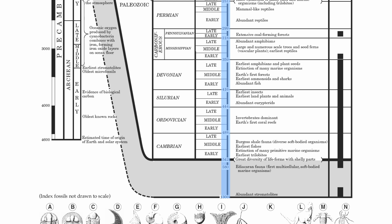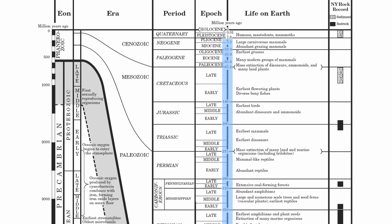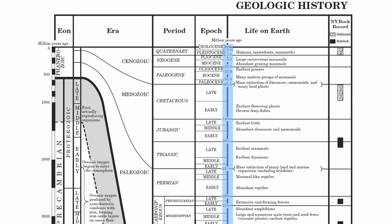Next to the epochs, there's another timescale extending from 1.3 billion at the bottom all the way up to zero, which is current time. This timescale is more specific than the one on the far left because it gives you beginning and ending values for each time unit — eons, eras, periods, or epochs — so you can determine how long each unit lasted. For example, the Jurassic period began 200 million years ago. The top number of that box shows it ended 146 million years ago. Subtract those two, and the Jurassic lasted 46 million years. You can do that for any time unit.